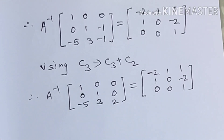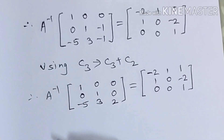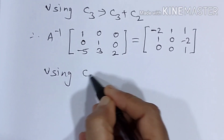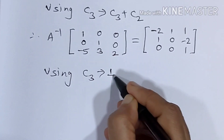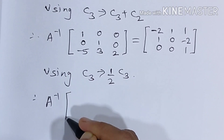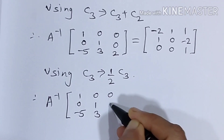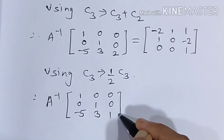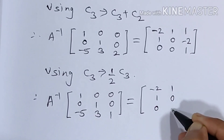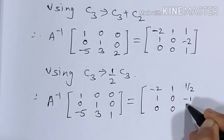The first two rows are set. Now for the third row we want 0 0 1, so we need 1 in this position. The next operation is C3 changes to (1/2) times C3. The matrix becomes: 1 0 minus 5 / 0 1 3 / 0 0 1. On the right-hand side, the third column is multiplied by half, giving: 1/2 here, minus 1 here, and 1/2 here.